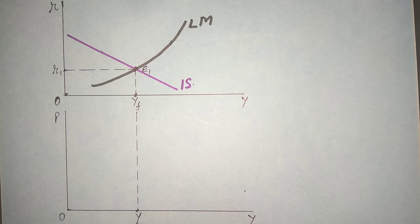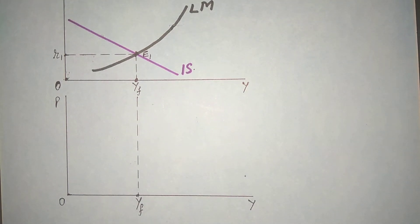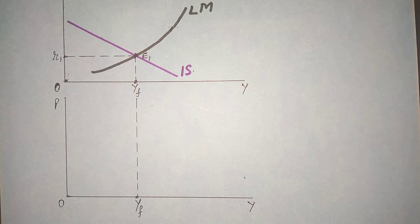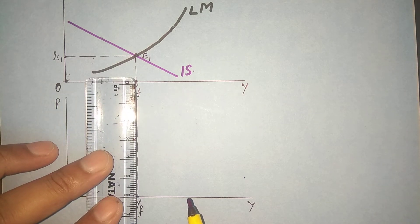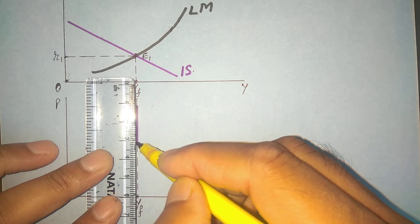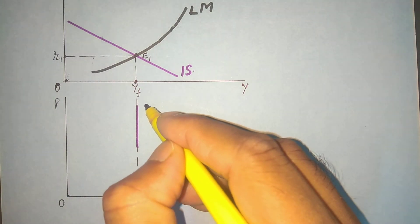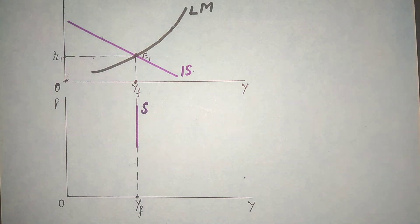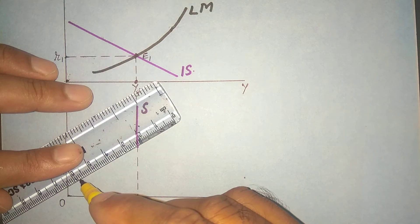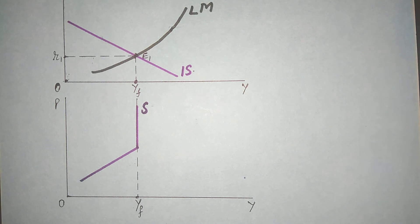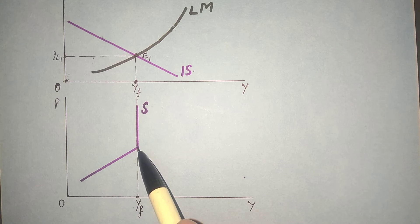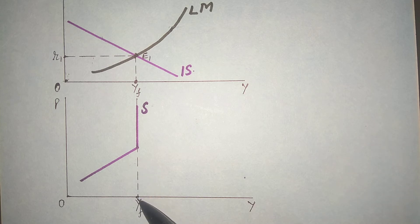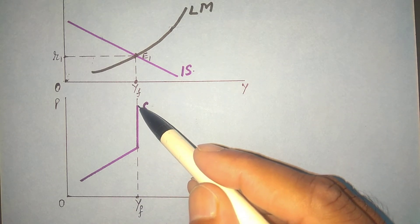In the lower panel, suppose this is Yf — full employment. Because of full employment we cannot increase supply beyond this point, so the supply curve becomes perfectly inelastic here. The supply curve will be positively sloped up to Yf, but at Yf it becomes vertical — perfectly inelastic — because we cannot increase supply beyond full employment.